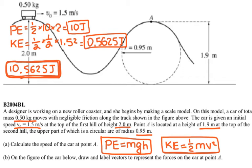I'm going to look at the top of the second hill. The top of the second hill has potential energy of mass times g times h, where h is 1.9, which gives me 9.5 joules.